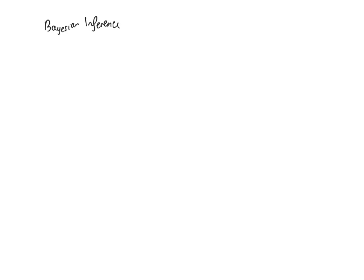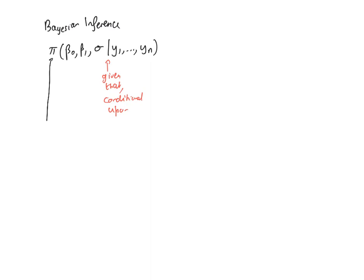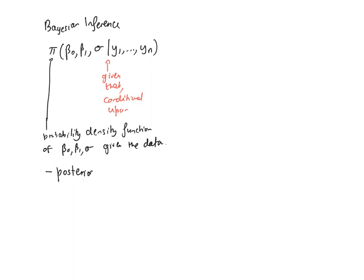Bayesian inference is based on a mathematical object which looks a bit odd when first written but I'll explain what it means. This bar here means 'given that' or 'conditional upon.' What we have here is a probability density function of the parameters that are unknown — we're assuming they're random variables given the data. This object is referred to as the posterior, or posterior probability density function, or posterior distribution.